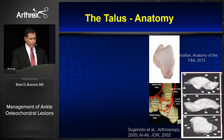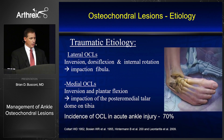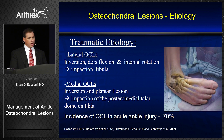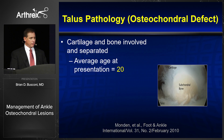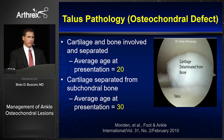The talus is a very unique bone — 60% of it is covered by articular cartilage. It has very thin articular cartilage, relatively poor blood supply, and once damaged, cartilage healing is very minimal. We know there's a traumatic etiology to the majority of these lesions: lateral osteochondral lesions from inversion, dorsiflexion, and internal rotation, and medial lesions from inversion and plantar flexion. These lesions lead to different injury types depending on age — patients around age 20 usually present with a combined cartilage and bone lesion, whereas patients over 30 generally have just a cartilaginous injury.